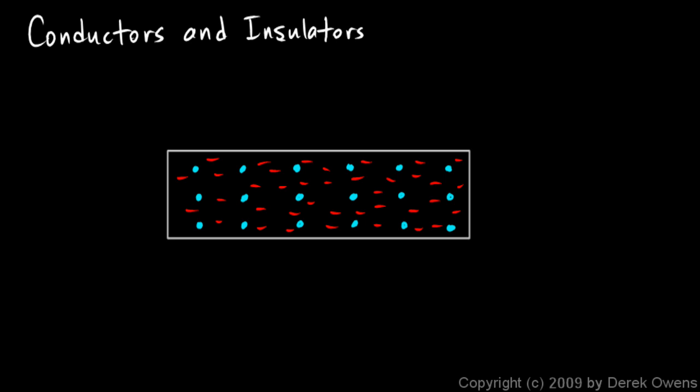Everything is made up of atoms. Let's suppose this rectangle represents a piece of metal, and the dots inside it, the blue dots, represent the nuclei of the atoms. The atoms are arranged in a lattice structure, and the exact arrangement is different in different materials.